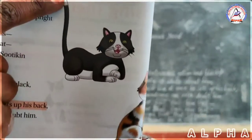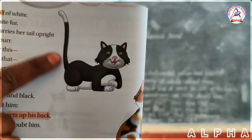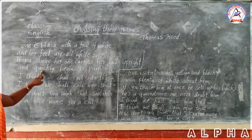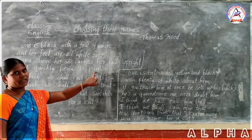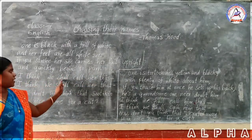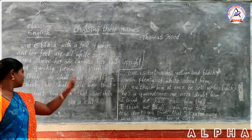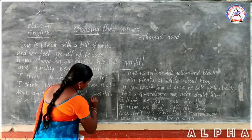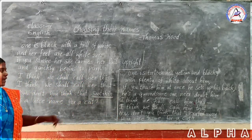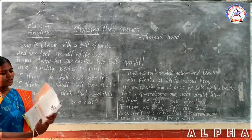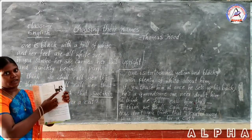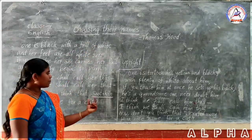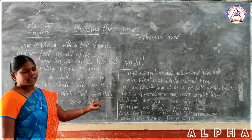If you stroke her, she carries her tail upright and quickly begins to purr. I think we shall call her Sooty King. Don't you think that Sooty King is a nice name for a cat? Because this cat is full of black color on her skin, the poet compares her to soot, so the poet selects the second cat's name as Sooty King.